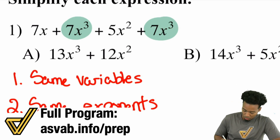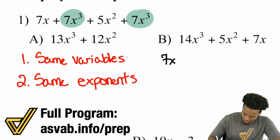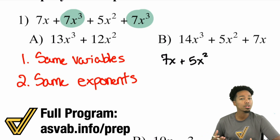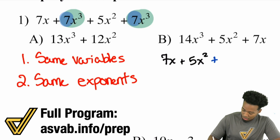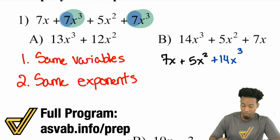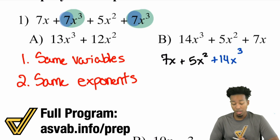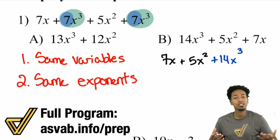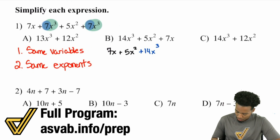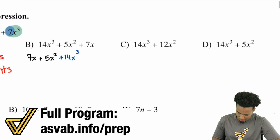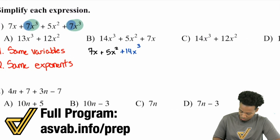We can combine those, so everything else we write just the same — 7x plus 5x squared. The two 7x cubed terms get combined: you simply add the coefficients. 7 plus 7 is 14, so that'll be plus 14x cubed, and you keep the variable the same. So the answer to number one is 14x³ plus 5x² plus 7x — answer choice B. Booyah.